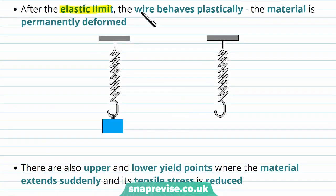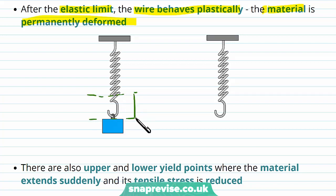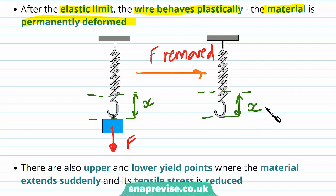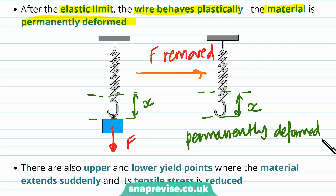After the elastic limit the wire behaves plastically — the material is permanently deformed. If we apply a load so the spring has an extension X, then remove the load, but the spring hasn't returned to its original length and still has an extension, then it's no longer behaving elastically and has been permanently deformed. This occurs beyond the elastic limit, in the plastic region.